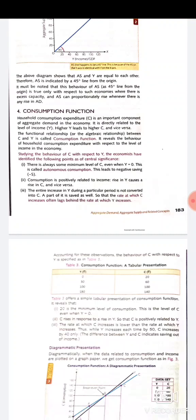There is always some minimum level of consumption even when income is zero because, for survival, the consumer will either borrow from outside or use his past savings. This is called autonomous consumption and leads to negative savings. The second point is that consumption is positively related to income — a rise in income causes a rise in consumption, and a decrease in income causes a decrease in consumption.